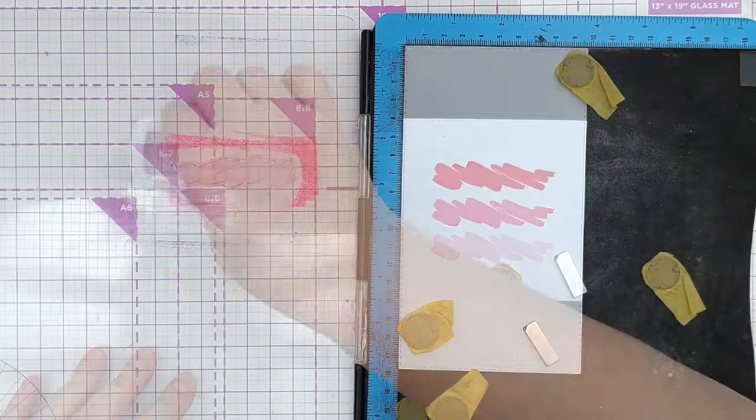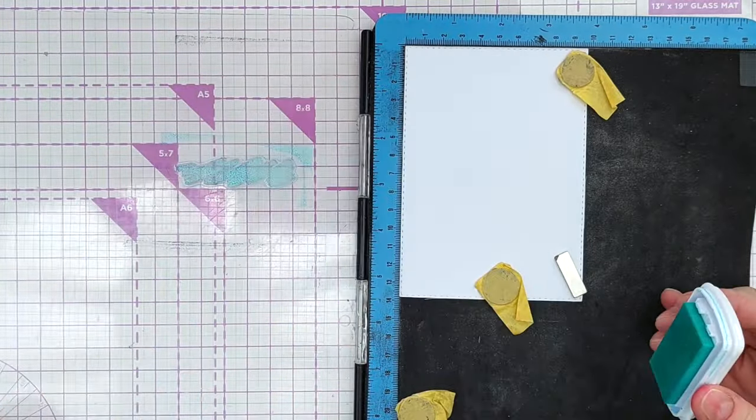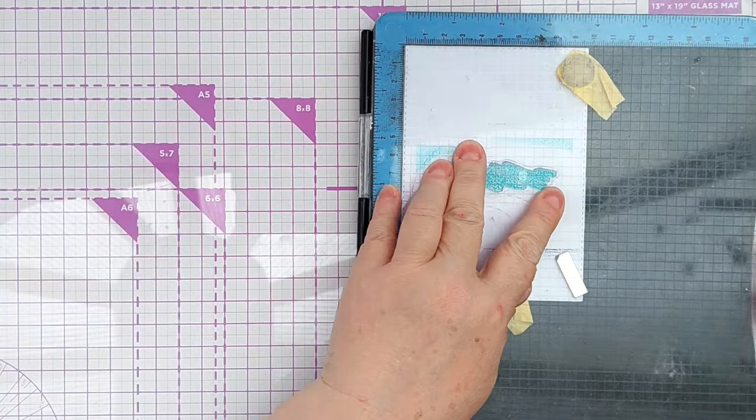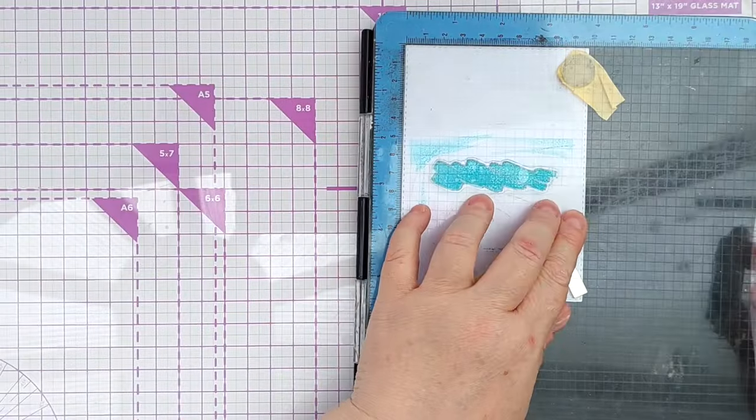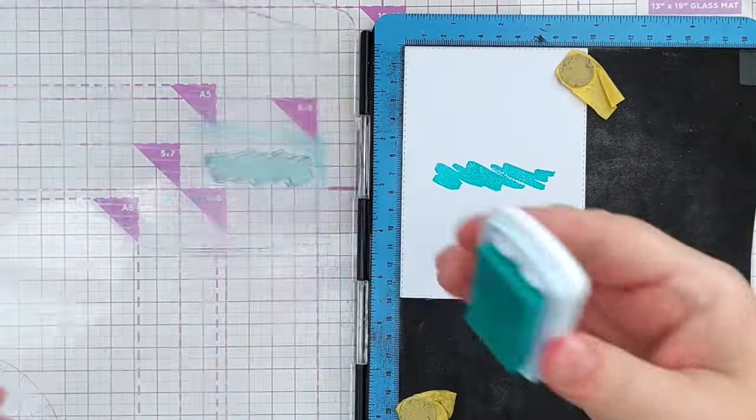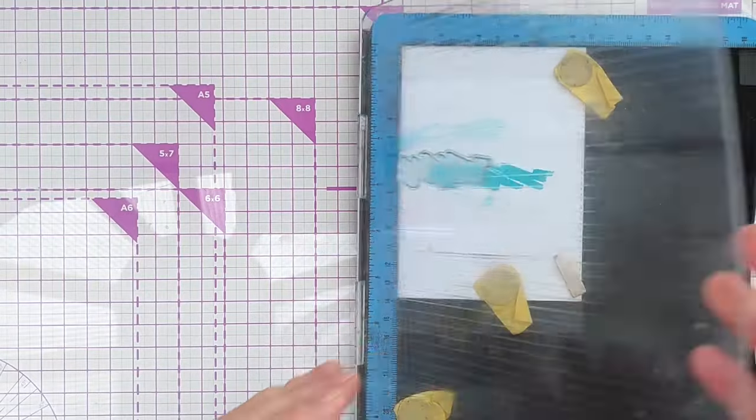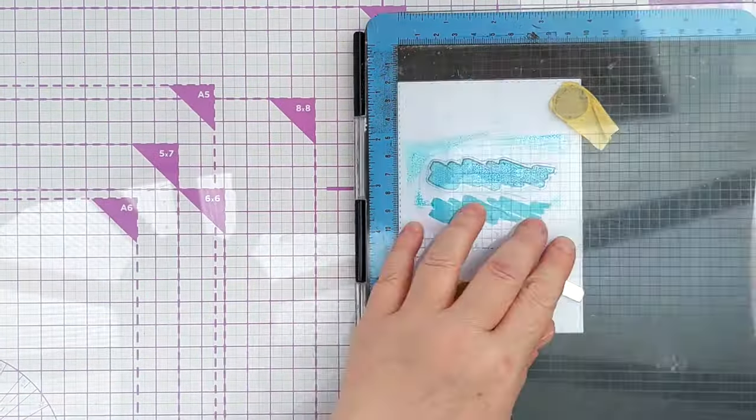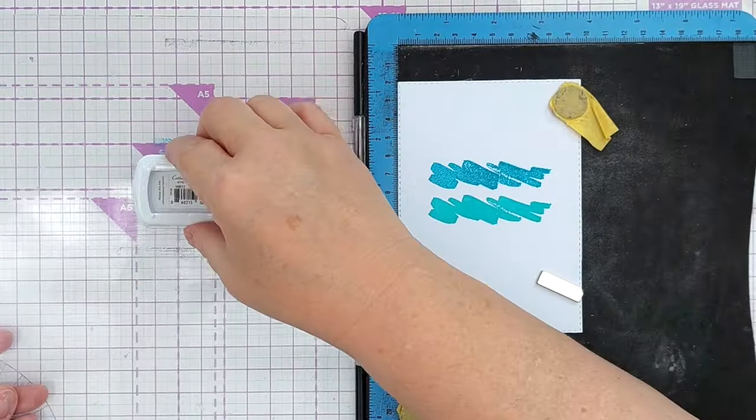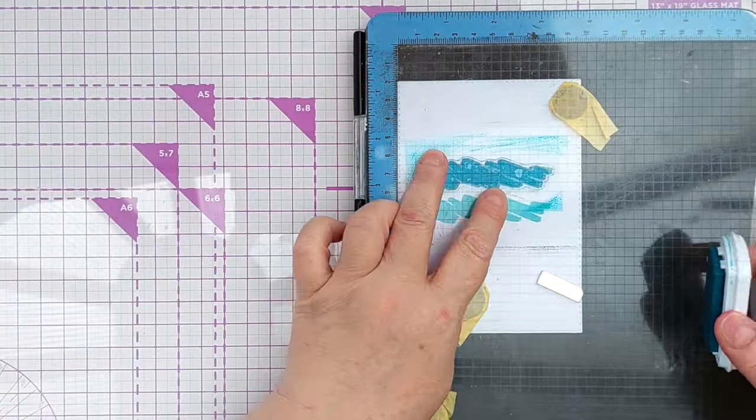Next I took another panel and did exactly the same thing without moving the stamp using some blue-green inks. The lightest one is Cummerbund, the middle one is Fiesta Blue and the darkest one is All That Jazz. I actually only stamped All That Jazz twice because it was saturated enough to give me a really good impression.